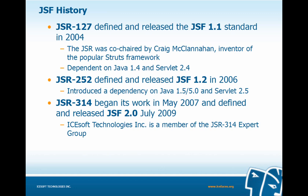JSR 127 defined and released the JSF 1.1 standard in 2004, co-chaired by Craig McClanahan, with a dependency on Java 1.4 and Servlet 2.4. JSR 252 then defined and released JSF 1.2 in 2006 with a dependency on Java 5 and Servlet 2.5. JSR 314 began its work in May 2007 and released JSF 2.0 in July of 2009. It's important to note that iSoft Technologies is a member of the JSR 314 expert group and has been actively involved in the development of this latest JSF release.